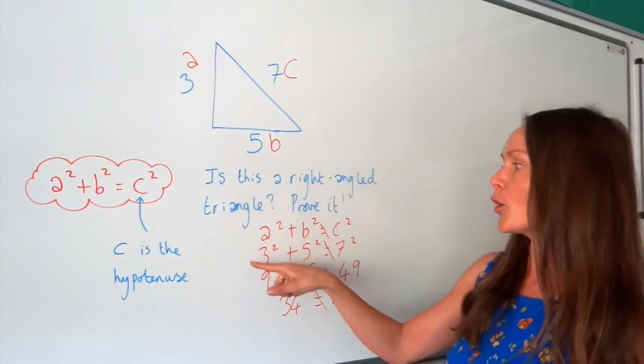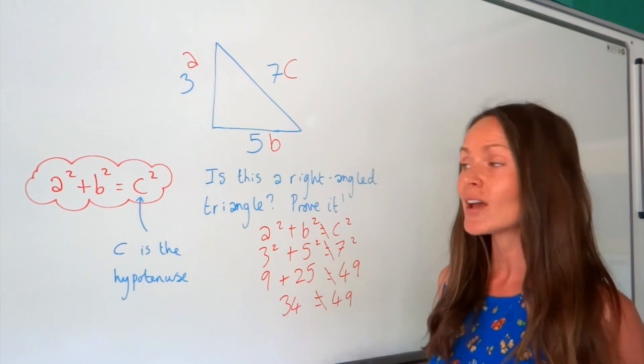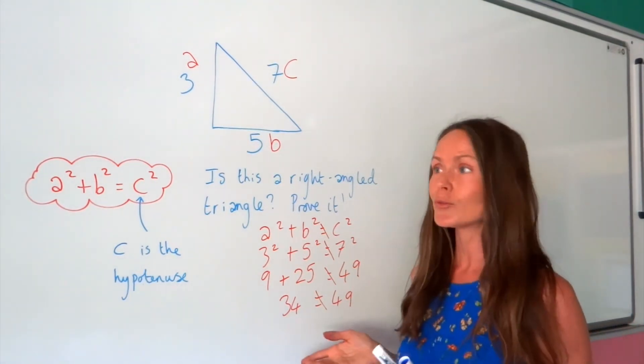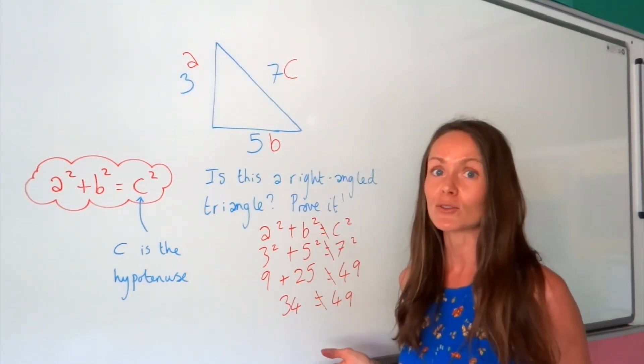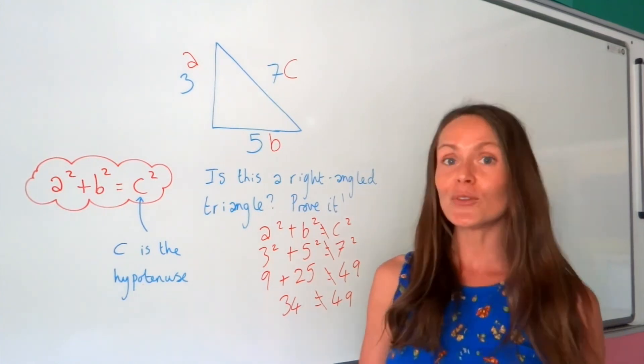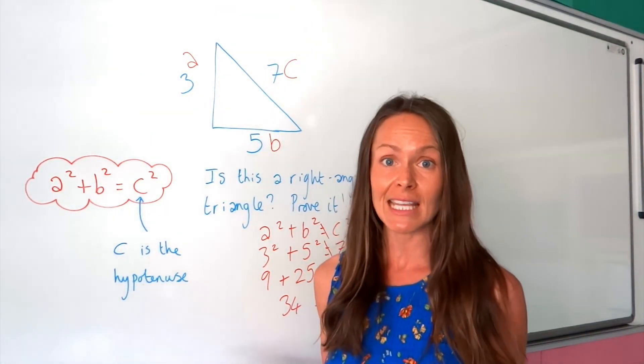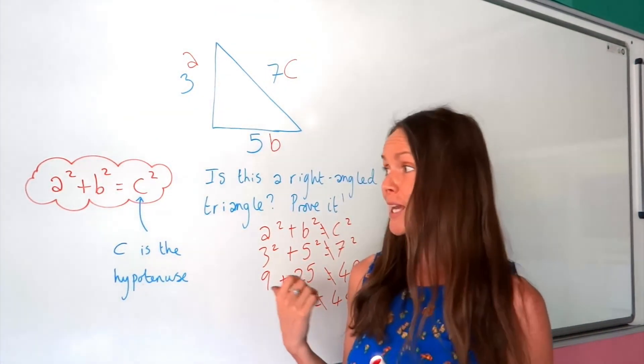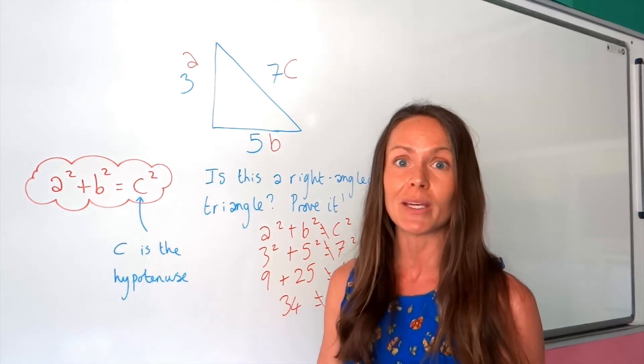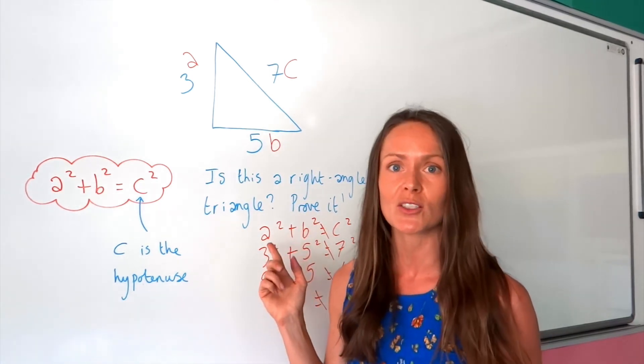So you would write no, and then you'd write this working down, and that would be sufficient proof to show that it's not a right angle triangle. So hopefully you understand Pythagoras' theorem now, and you'll be able to answer questions finding A, B, C, or maybe a challenge question like this one.